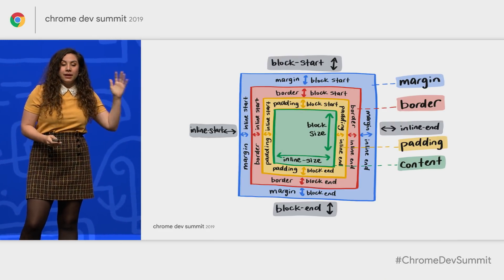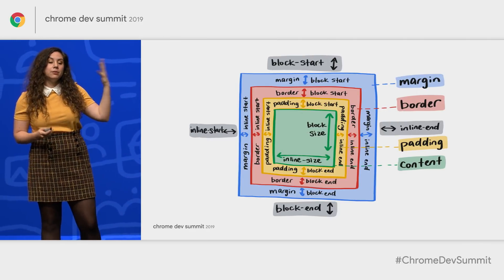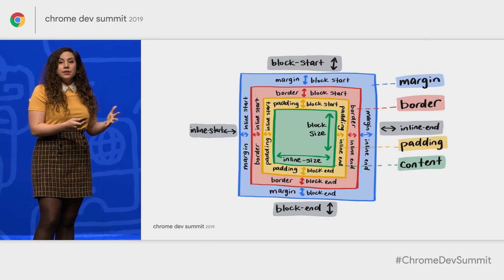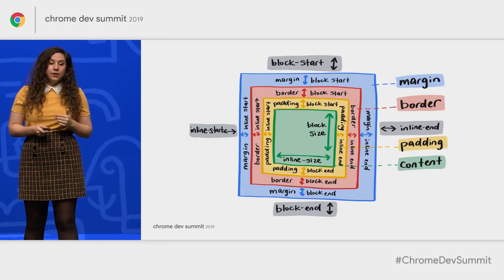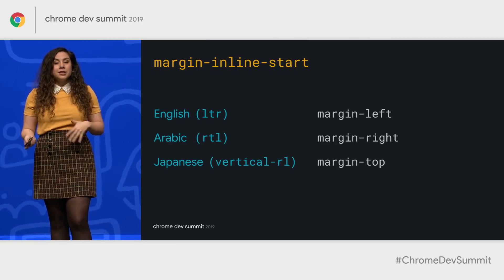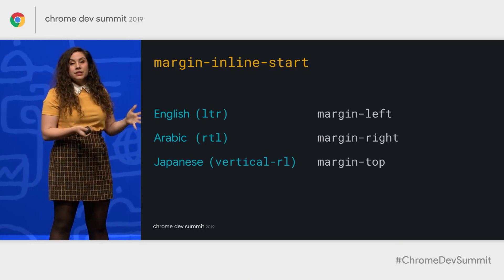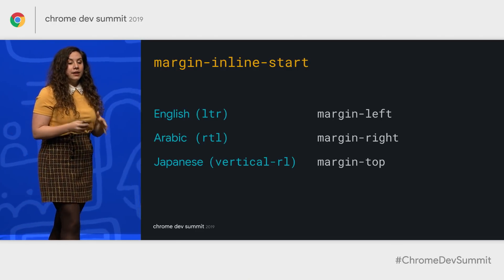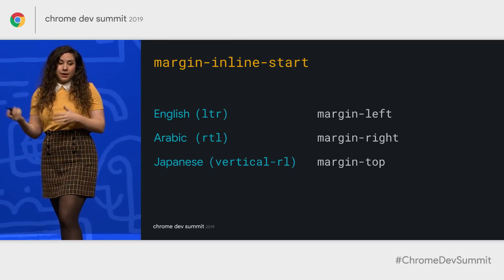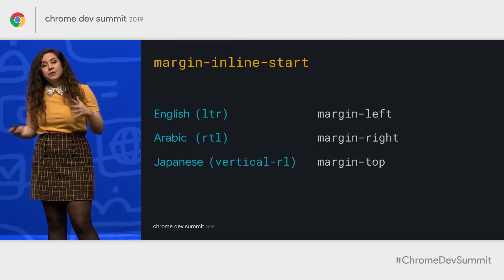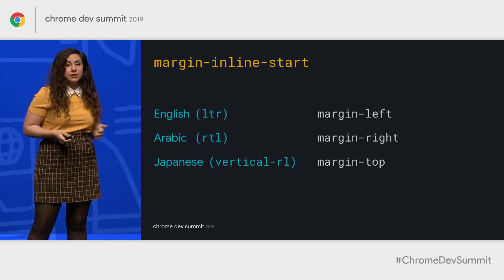Instead of thinking about layout as top/right/bottom/left with height and width, we think of it in this new mental model. With logical properties, the browser creates adjustments for us based on writing mode and direction. In a left-to-right language like English, margin-inline-start refers to margin-left. In a right-to-left language that would be margin-right. In some Japanese typography with a vertical right-to-left language, that might be margin-top. We don't have to make all these calculations ourselves — the browser does it for us.